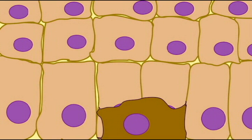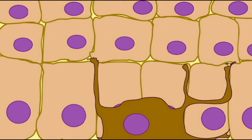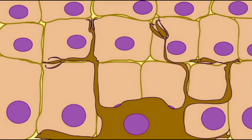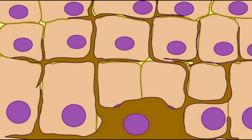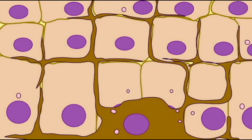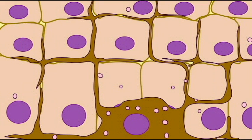Some individuals are incapable of making this eumelanin or do not make large quantities. Instead, their skin and hair is primarily pigmented by pheomelanosomes, giving their skin a much lighter color and their hair a lighter or even reddish color.